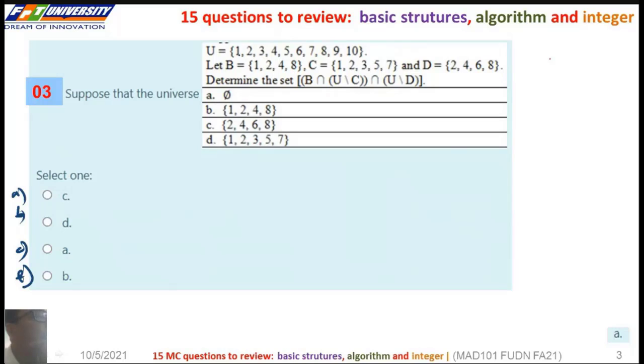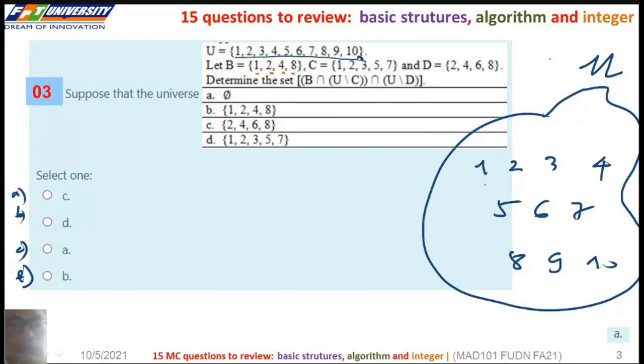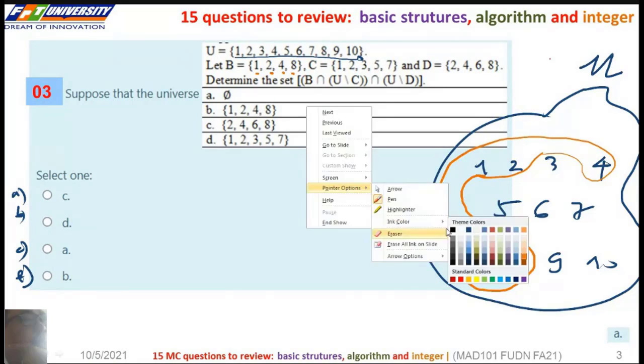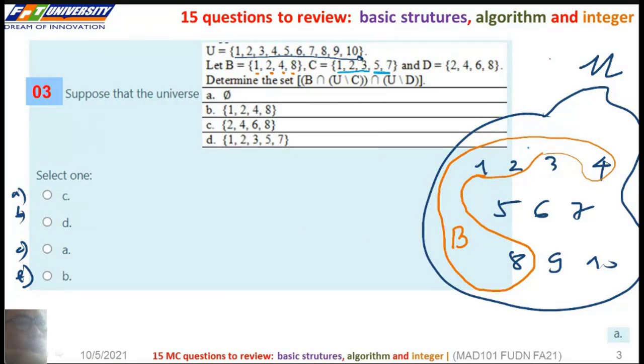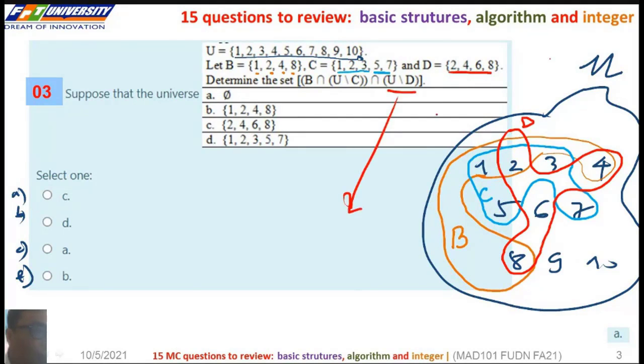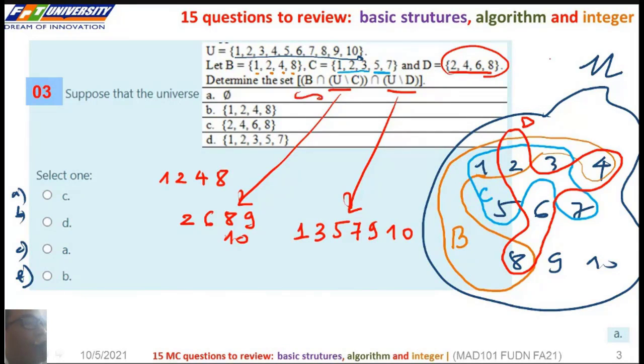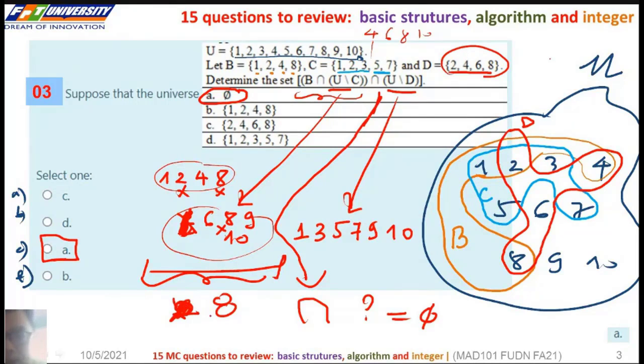So we use the universal set and set B is 1, 2, 4, 8. The set C is 1, 2, 3, 5, 7. D is 2, 4, 6, 8. The complement of D, so the difference is 1, 3, 5, 7, 9, 10. The complement of C is 4, 6, 8, 9, 10. We want to find the intersection here. Sorry, the intersection here is 8.